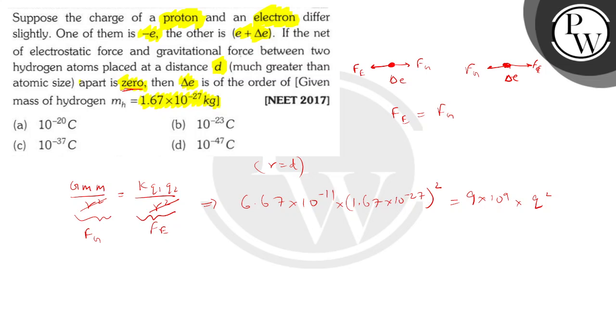Now, on solving the constants, we have (6.67 × 1.67²)/9. And then we have 10^(-54-11) = 10^9 × Q². So, on calculation, this will come out to be roughly 18 point something. So, we can say that this value is about 2.